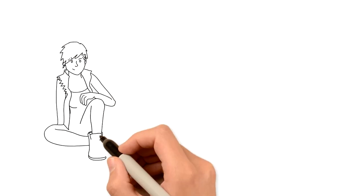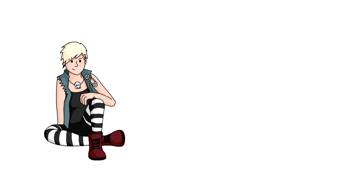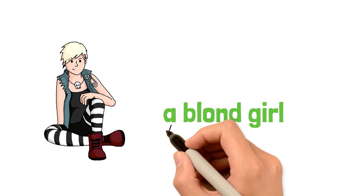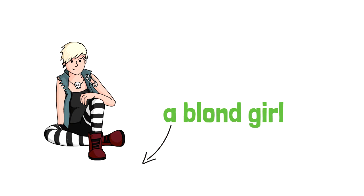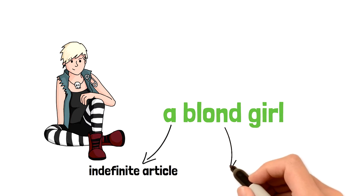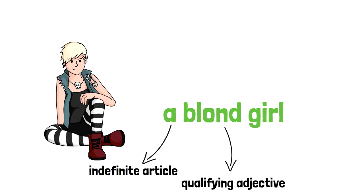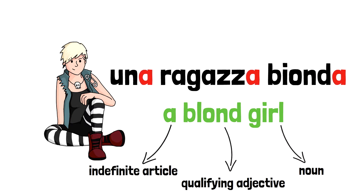Let's look at some examples. A blonde girl. Una is an indefinite article. Blonde is a qualifying adjective, and girl is a noun.